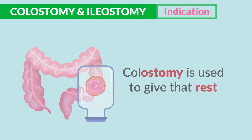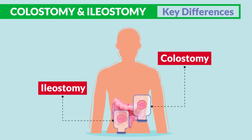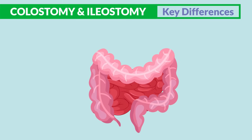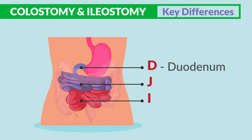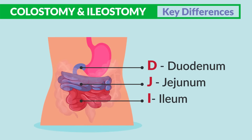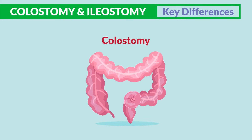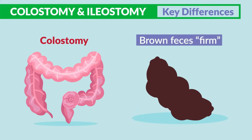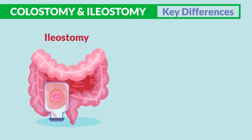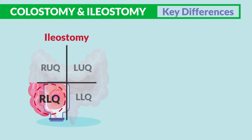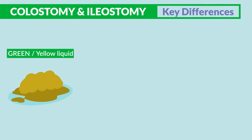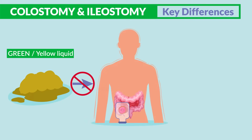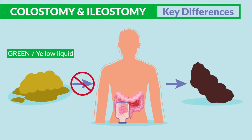The main difference between an ileostomy and a colostomy is simply the location. Looking at the chart, we see the anatomy of the large intestine (the colon) and the three parts of the small intestine: D for duodenum, J for jejunum, and I for ileum. In a colostomy, the opening is in the colon, producing brown, firm feces. In an ileostomy, the opening is in the ileum in the right lower quadrant, producing green-yellow liquid output since the gastric juices haven't traveled through the colon yet.